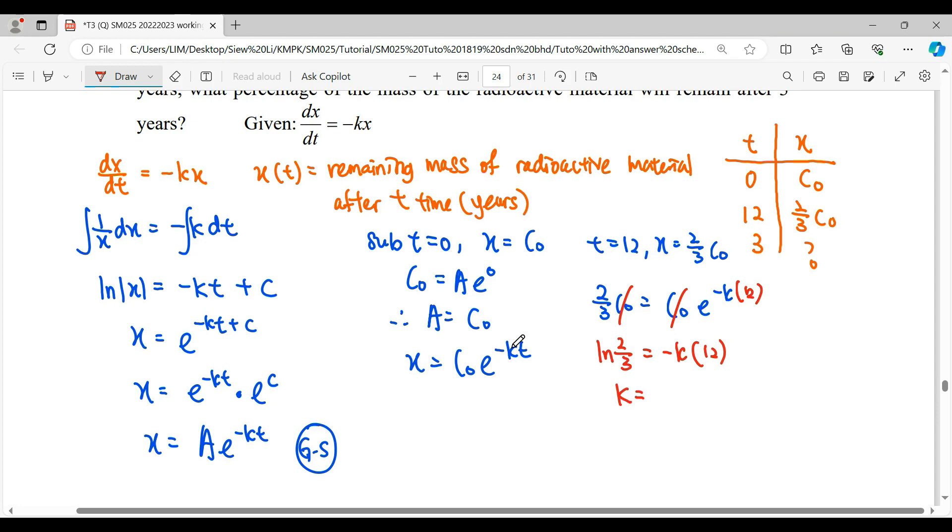So therefore, we get particular solution where x equals C₀e. So negative k, so negative negative here will give us positive ln of 2/3 divided by 12 times t.